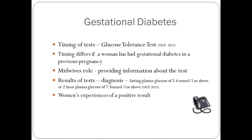So what is the midwife's role? The midwife's role is definitely about providing information: what the test is, how it is going to be undertaken, why we're screening, and how she will actually get the results. This is particularly important as in GP practices, parameters for diagnosing diabetes in pregnancy may get overlooked. GPs use GTTs to screen for type 2 diabetes in the non-pregnant population, where a positive result is above 11 millimoles per litre, whereas for gestational diabetes, a fasting glucose above 5.6 millimoles per litre or a two-hour measurement of 7.8 millimoles per litre or above would diagnose diabetes in pregnancy.